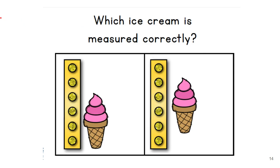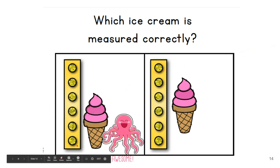Which ice cream is measured correctly? So let's look at how they measured these. Which one is the right way? The one on the left right here or the one on the right? The one on the left, because remember, whenever you measure, you have to start at the bottom and go to the top. Right here, they did not start at the bottom. So if I was going to look at this, I would say one, two, three, four, five, and that's not correct.